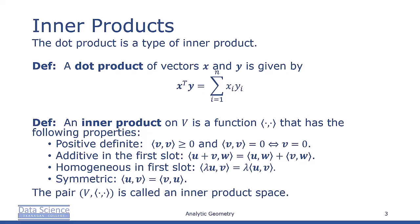It's additive in the first slot. So the inner product of u plus v with w is equal to the inner product of u and w plus the inner product of v and w.